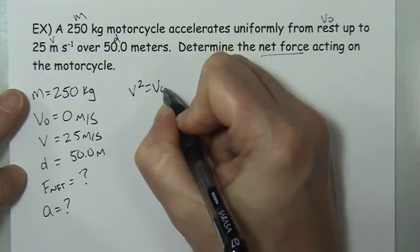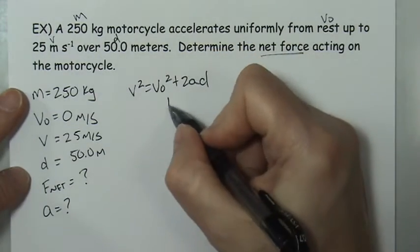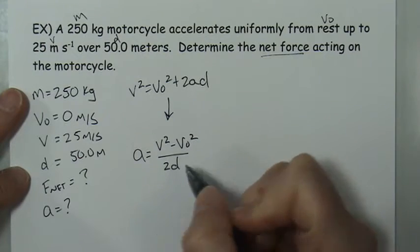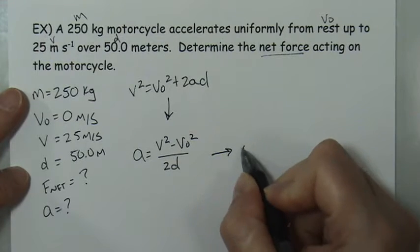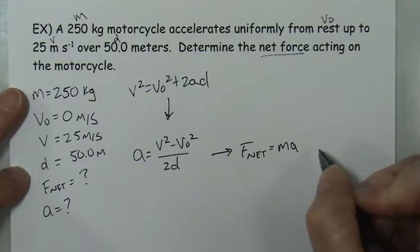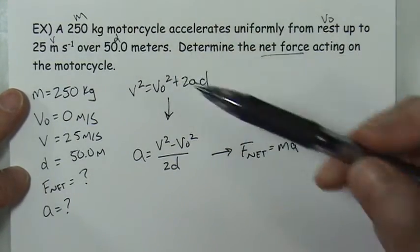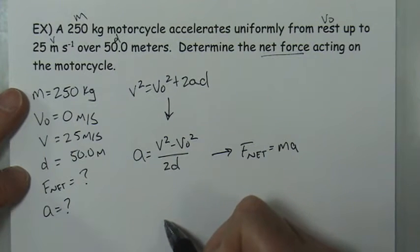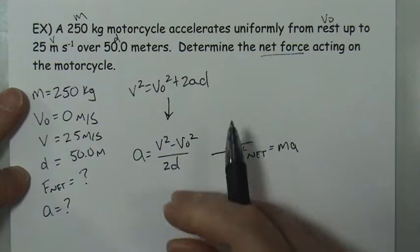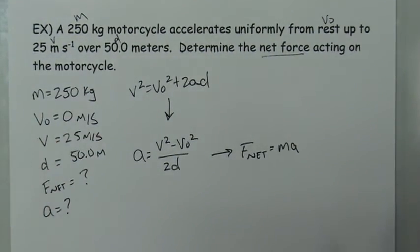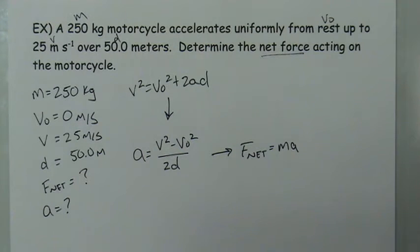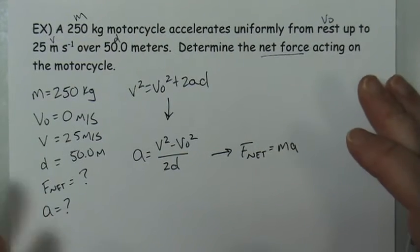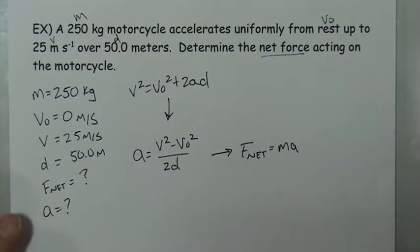The kinematic equation to use is v² = v₀² + 2ad. Solving for a: a = (v² − v₀²) / (2d). Once we have the acceleration, F_net = ma = 250 kilograms times that acceleration. You can finish this problem by plugging in the values, calculating the acceleration, then multiplying by 250 for the net force. This is a level three or four problem because it requires connecting information from kinematics with Newton's second law.